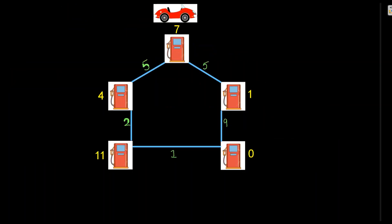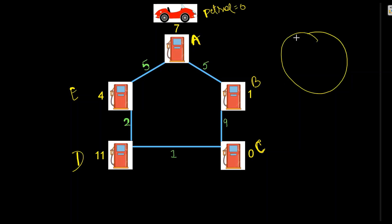So the question setup begins here. We have petrol pump A, then petrol pump B with a distance of five kilometers, then petrol pump C nine kilometers away from B, then D one kilometer away from C, and E two kilometers away from D. Now I have a car with empty petrol — petrol is equal to zero at A. I need to find the starting point so that the car can travel in a circular path without running out of petrol.